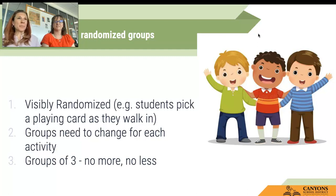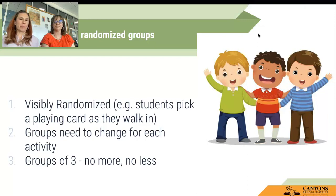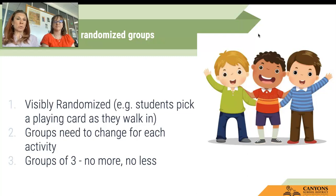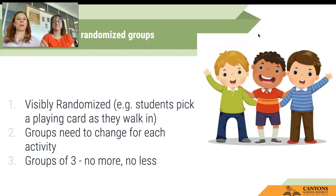Groups need to change for each activity. For classes about an hour long, that may be one activity per class period. But if you're on a block schedule, you may have two activities that day, so you need two randomized groups. He found that the optimal group number is three. If you put them into pairs, one tends to dominate — which you may want if working on a skill. If you put them in groups of four, two people tend to dominate and the other two fade back, which we don't want because we want everyone to participate.